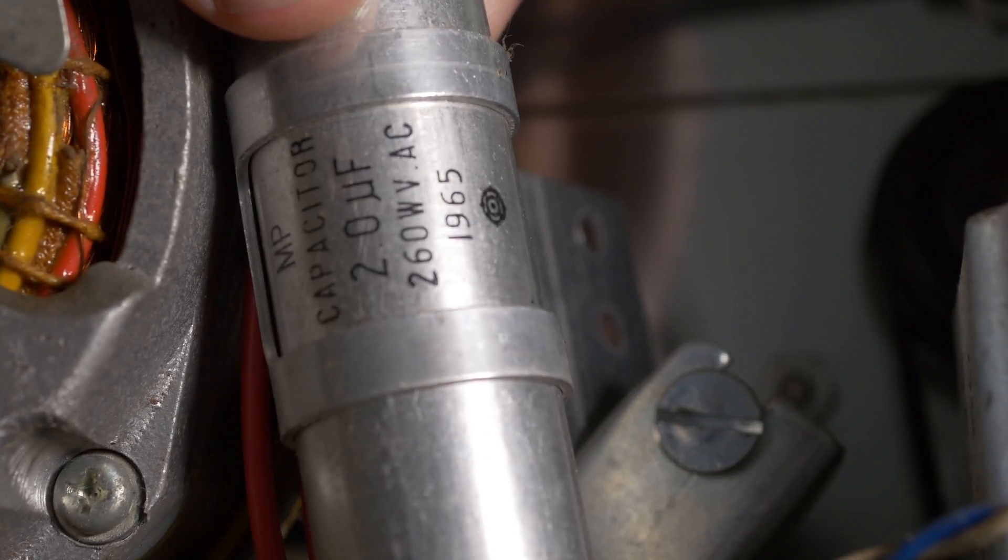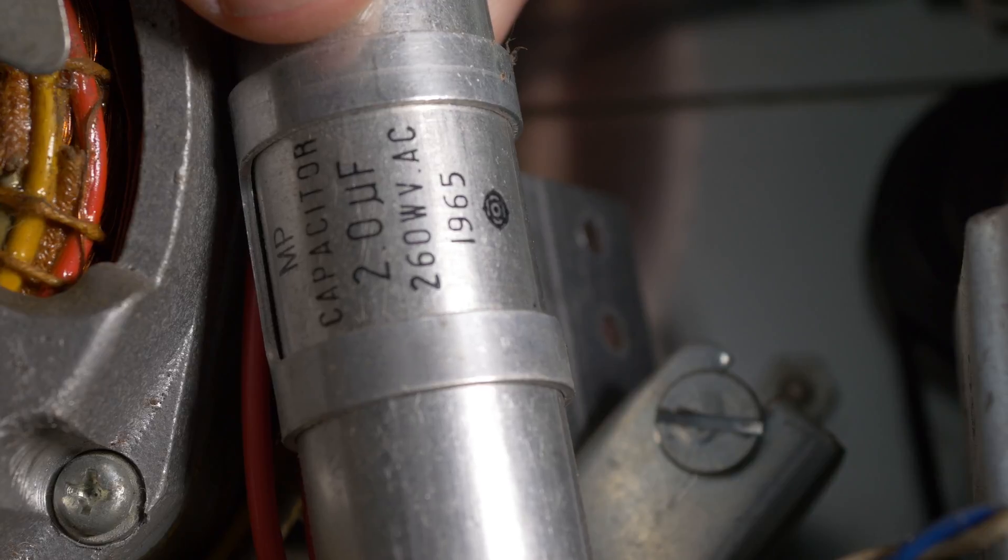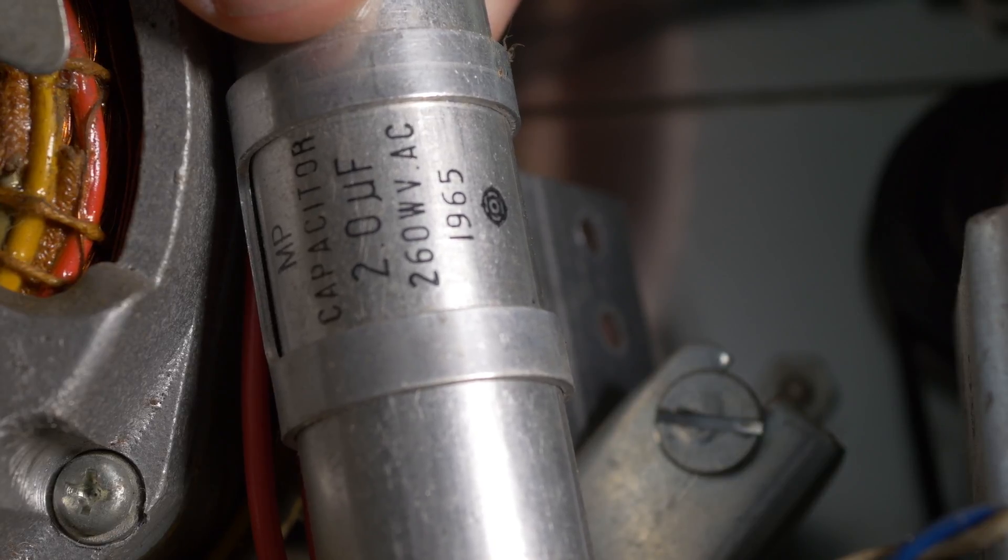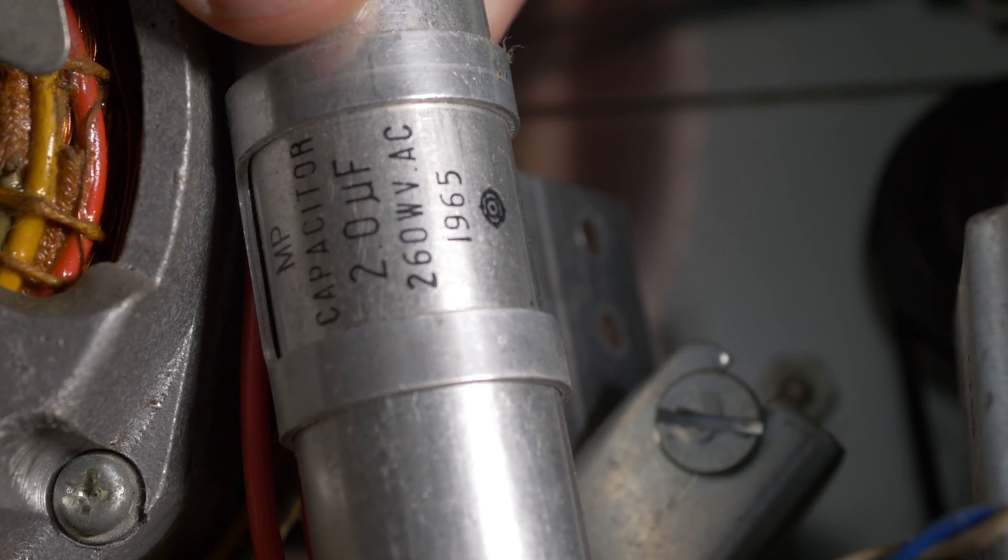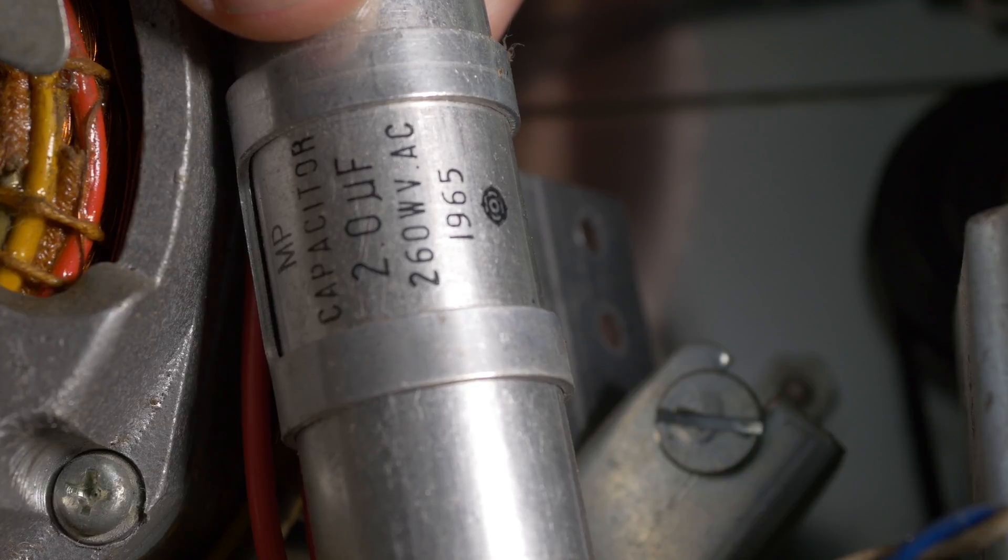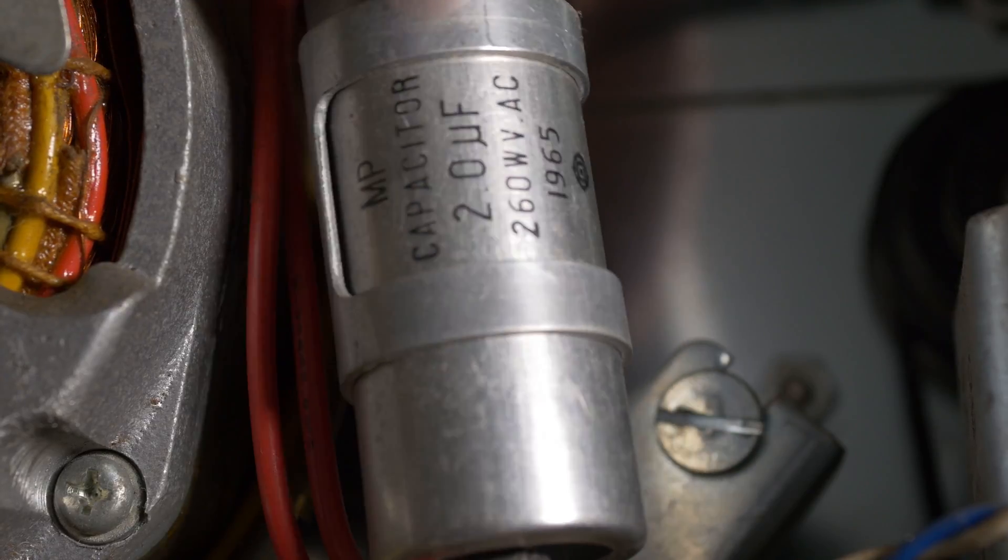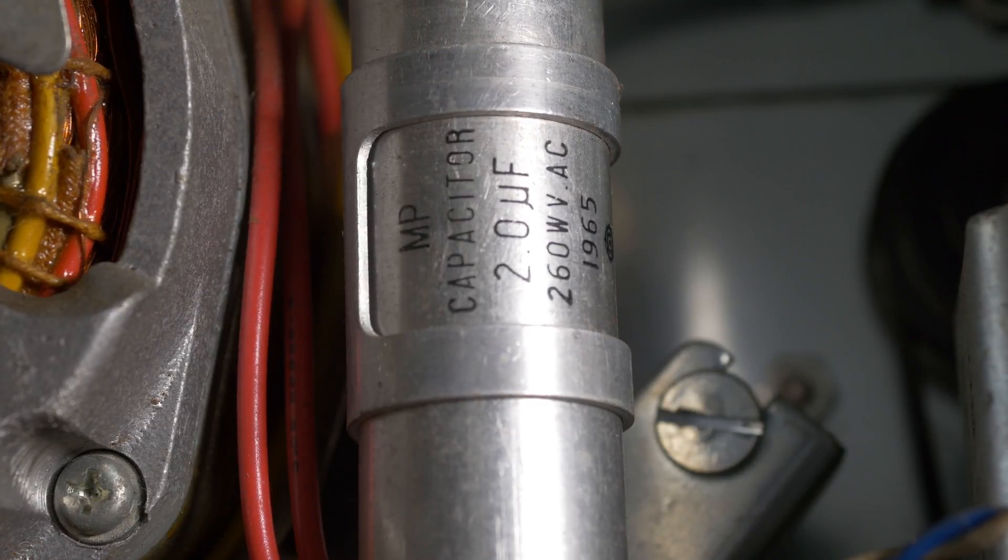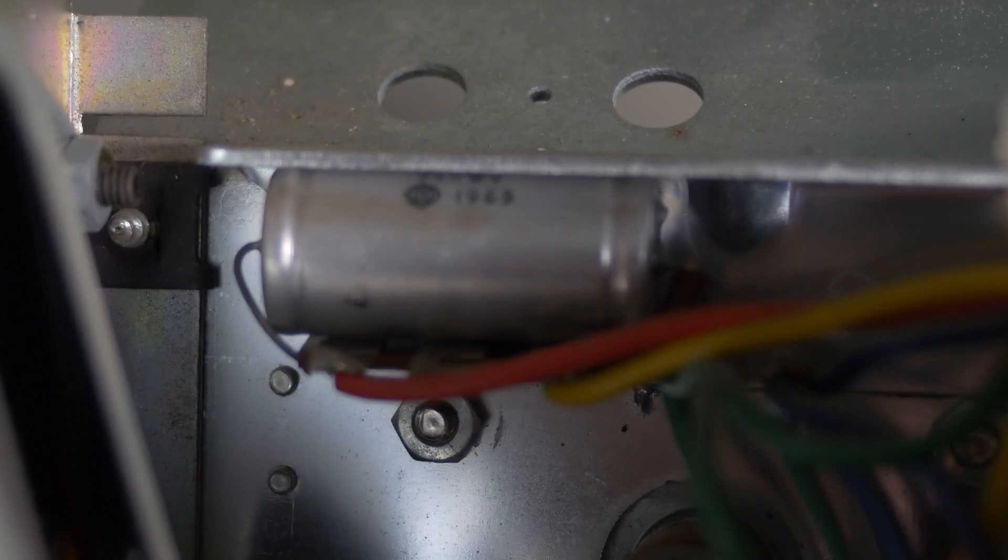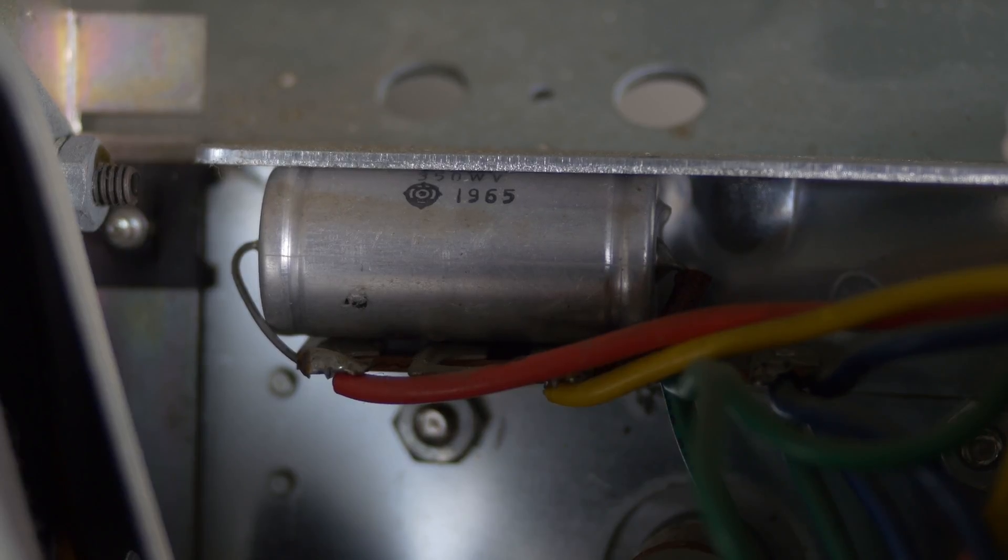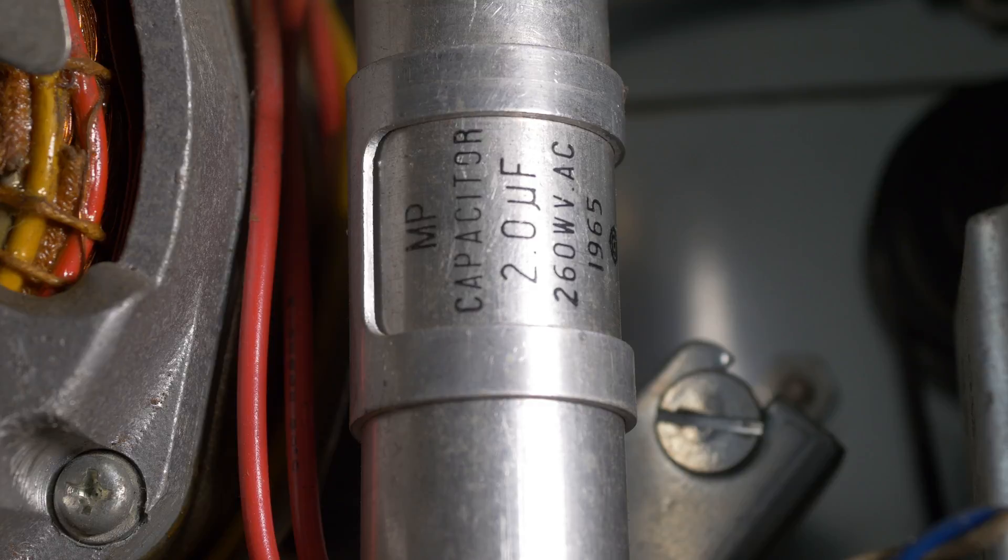Now that I have the case off, you can see what I believe is the manufacture date on the capacitor that failed, which is 1965, so it's not surprising that it failed. It also has a mark on it, which I believe is a Hitachi mark, and another capacitor in the case has the same mark, and also another marking of 1965, so that leads me to believe that 1965 is not a part number, but the manufacture date.